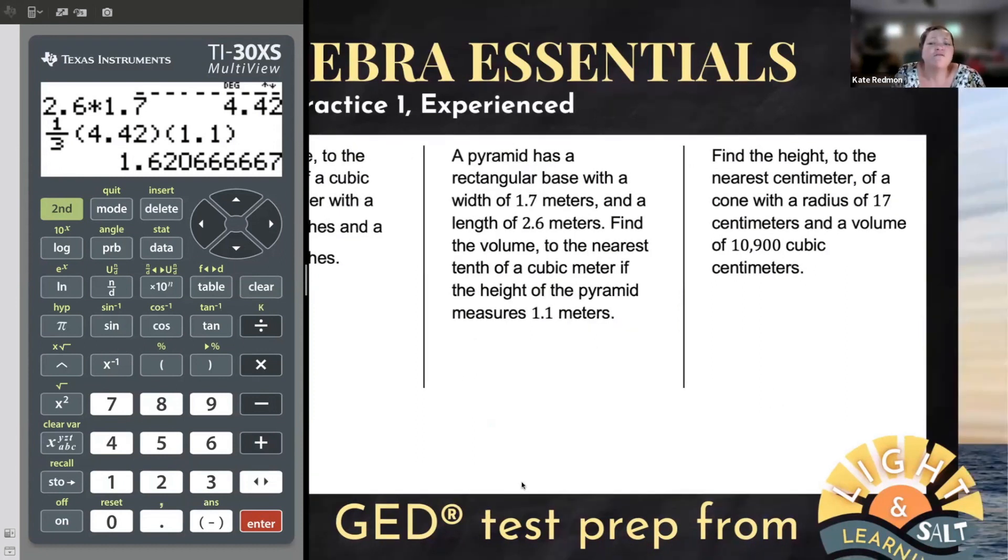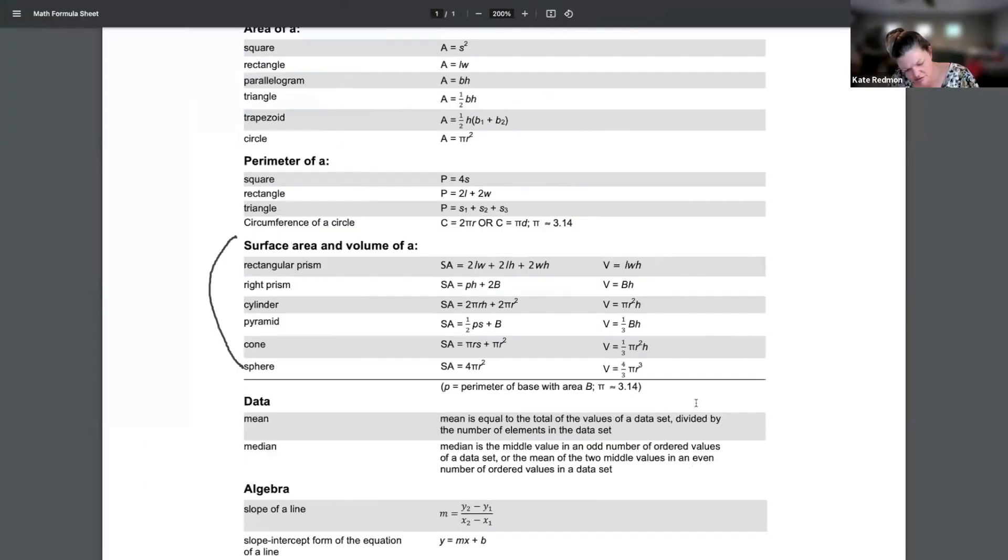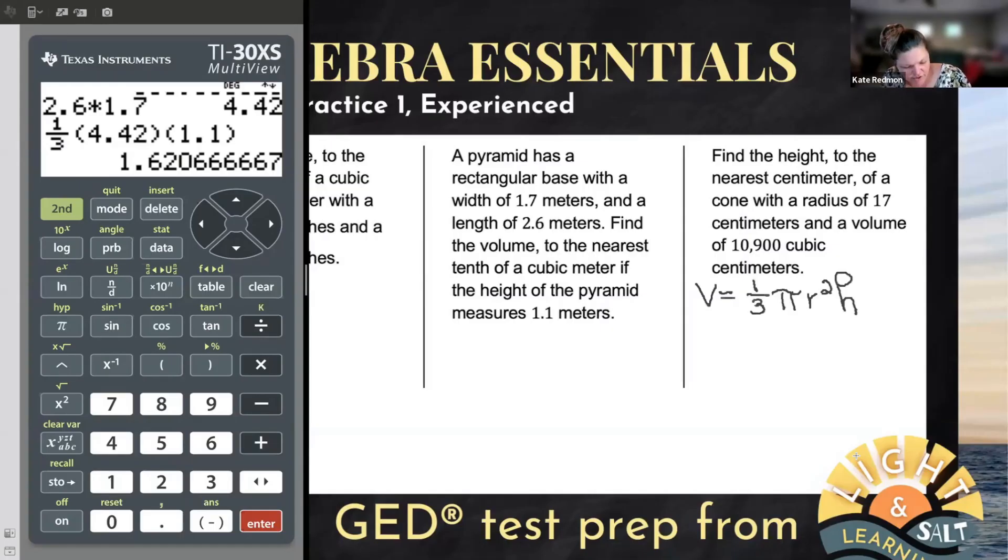Find the height to the nearest centimeter of a cone with a radius of 17 centimeters and a volume of 10,900 cubic centimeters. Once again, I'm looking at a volume formula. But this time, they're not telling me to find volume. Look at what it says. It says, we have a volume of 10,900 cubic centimeters. Guys, the volume is known. We're being asked to find the height. That's okay. We don't have to go find some new formula. There's not some height formula. I'm still going to look for the volume of a cone formula, but I'm going to use it differently. So there's my volume section again. There's my cone. V is equal to one-third pi r squared h.